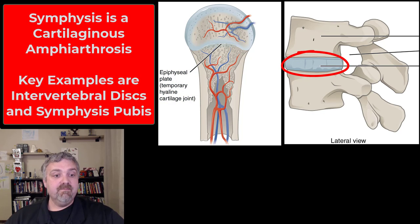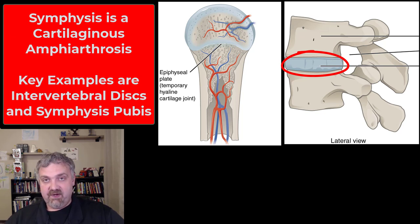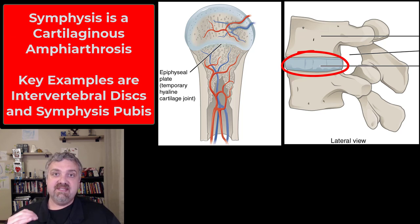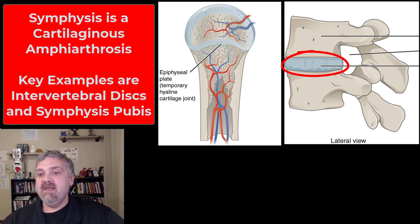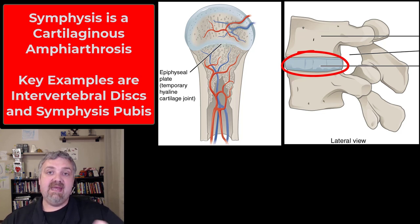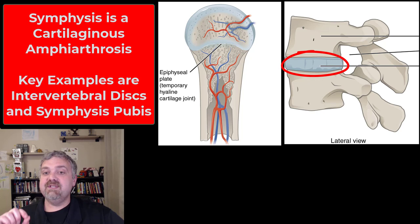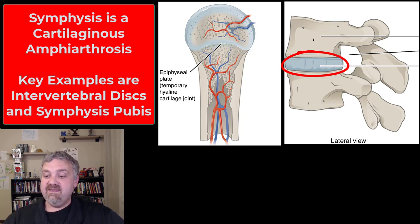The symphysis is a cartilaginous amphiarthrosis, meaning it is slightly movable. The example shown here is the intervertebral discs — there's movement and mobility between your spinal bones because of that cartilage pad. The other example in your body would be the symphysis pubis, the fibrocartilage pad between your two pubic bones. So that covers the synchondrosis, the bony synostosis, and the symphysis.